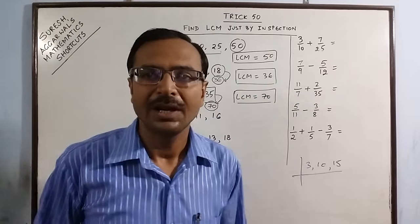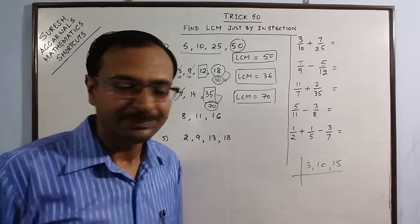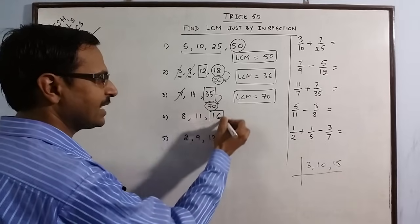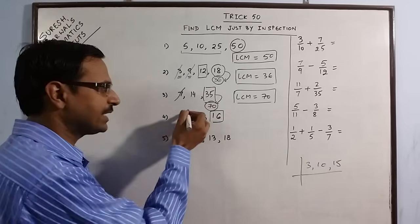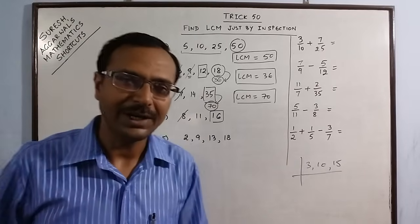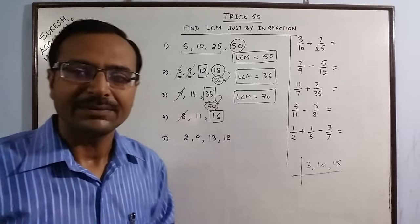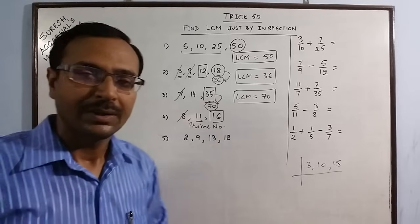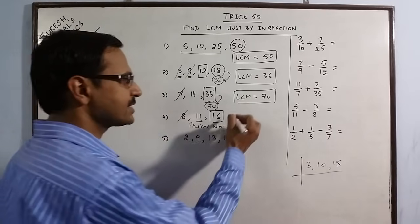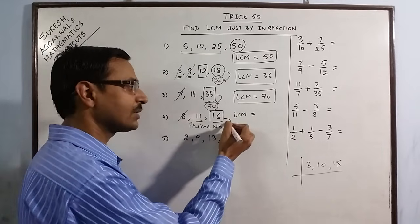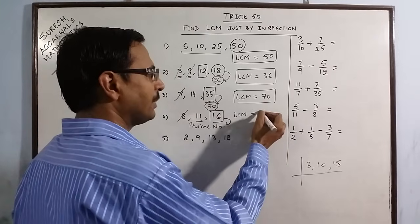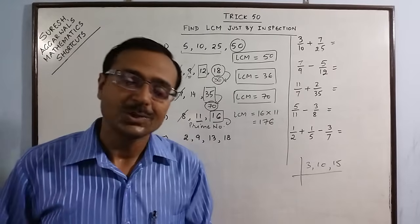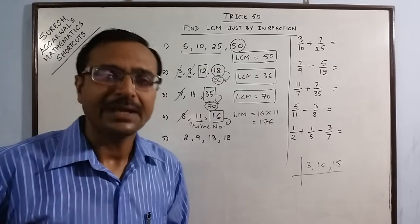Just by inspection and by getting rid of all traditional methods you can find the same by inspection. Now 8, 11 and 16. Yet another case where we have 16 as the highest number. 8 is a divisor of 16 so we cancel out 8. We are only left with 11 and 16. Now observe that this number 11 is a prime number. So when we have a prime number among the numbers whose LCM is to be found, the process becomes easier. We don't have to write the multiples of 16 now. We just have to multiply the highest number by the prime number and there you get the LCM 176 is the answer. So in case of prime numbers the process of taking LCM becomes simpler.